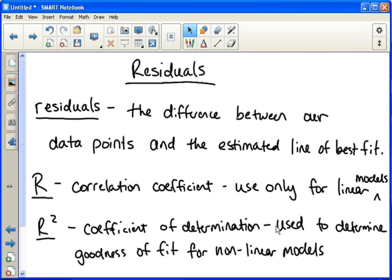So key words to remember: r is the correlation coefficient that will only be used for linear models. R squared is the coefficient of determination, and that's what we'll use for goodness of fit for linear and nonlinear models actually.